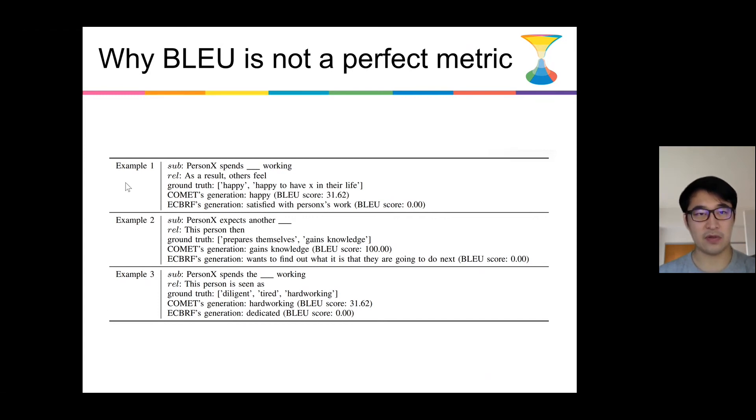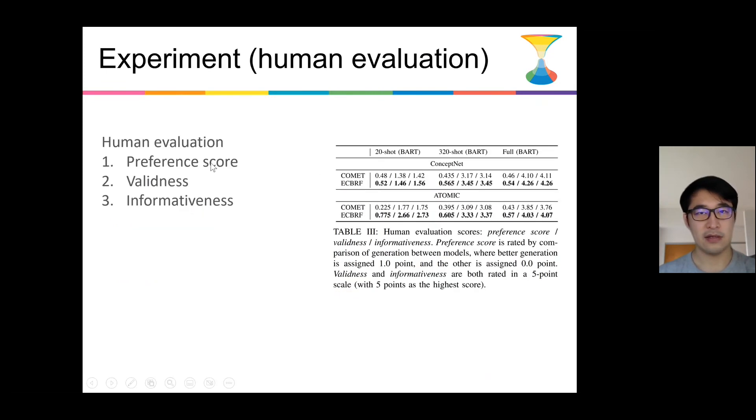In many examples where ECBRF generates reasonable objects, they receive very low score as zero score, and COMET will receive like very high score like 100. So we should mostly rely on human evaluation in this task. As we show in human evaluation, ECBRF outperforms COMET in both ConceptNet and ATOMIC datasets, in both few-shot setting and in a large train set setting.